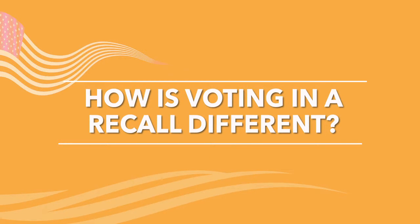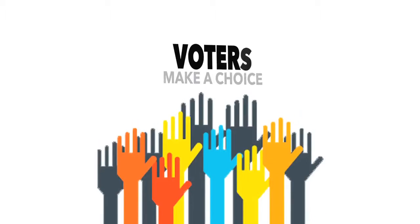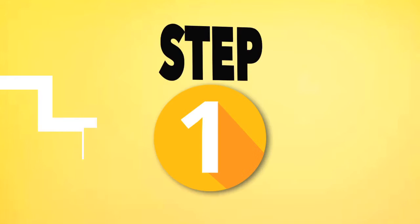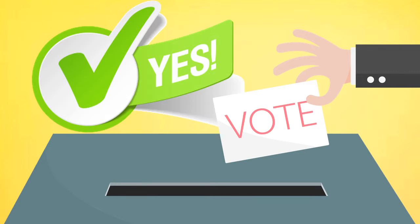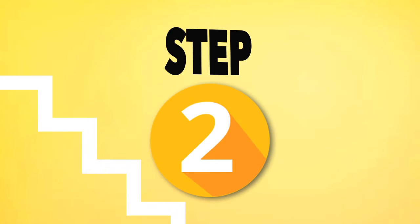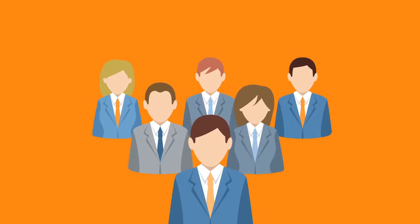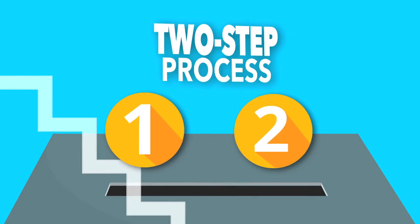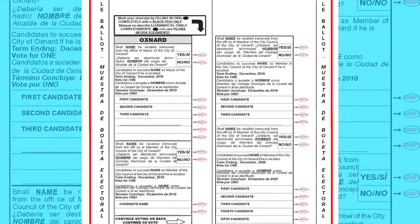In a recall, voters make a choice for each individual office in a two-step process. In the first step, voters will decide either in favor of yes or against no the removal of each officeholder. In the second step, the voter will choose the candidate they wish to take that office if the recall takes place. They will repeat these two steps for each office that's on the recall ballot.